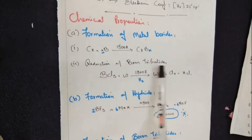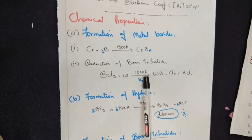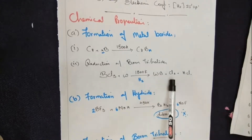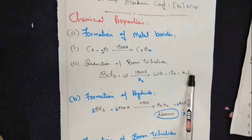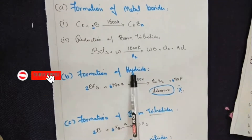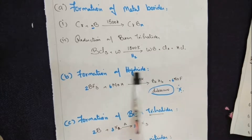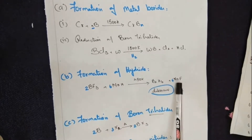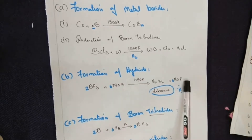Reduction of boron trihalides: boron trihalide treated with tungsten at a given temperature condition — remember, reduction means addition of hydrogen — gives a metal boride along with HCl going out. Formation of a hydride: boron trifluoride treated with a hydride (identified by the presence of hydrogen) gives diborane along with sodium fluoride, because fluorine combines with sodium and sodium fluoride goes out.